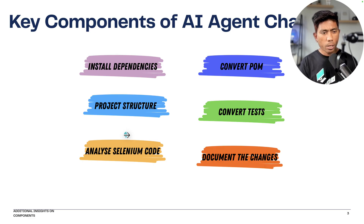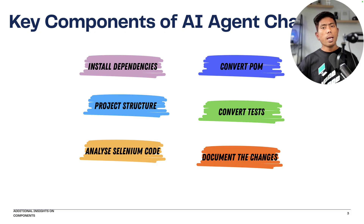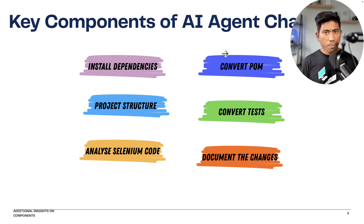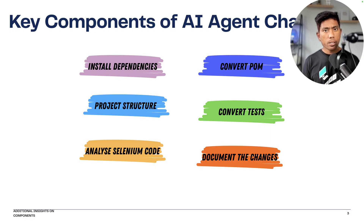I'll quickly show you how I've built this particular chat mode for Selenium-to-Playwright conversion. It has a few steps: first, it installs Playwright dependencies if they don't already exist. Then it analyzes the Selenium project structure before making any code changes. It converts the existing Selenium page object model code to Playwright page object model code in a separate folder, and also converts the tests that use those page objects.